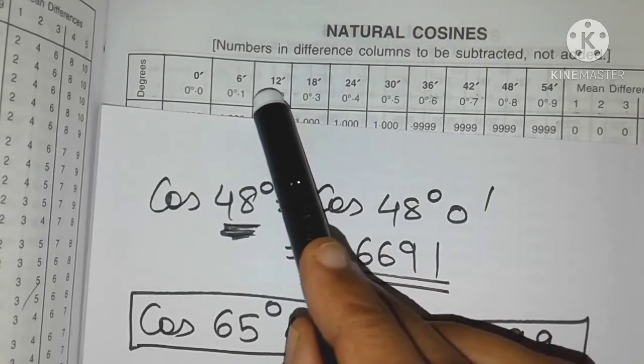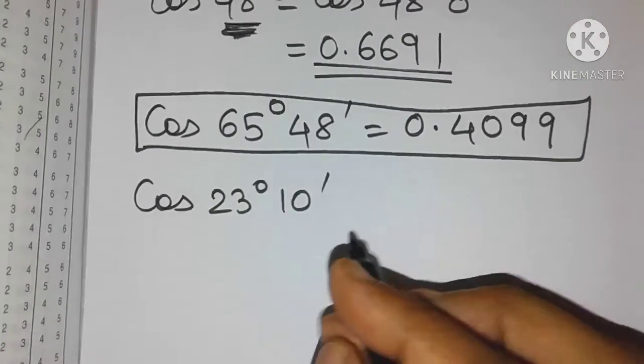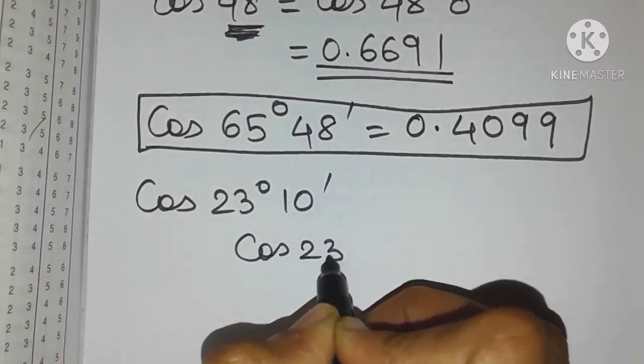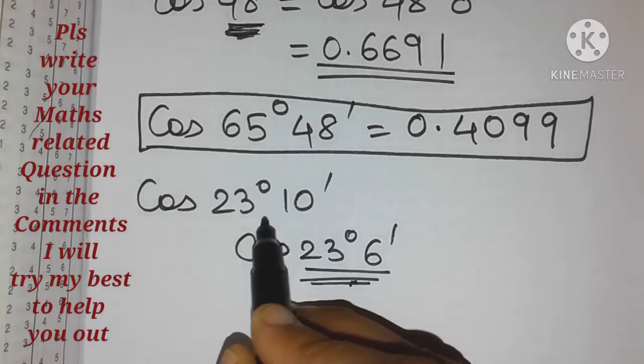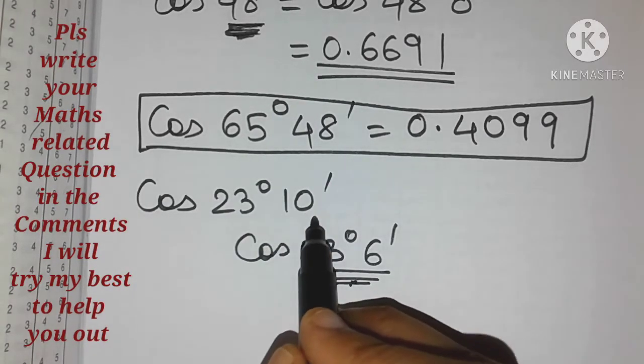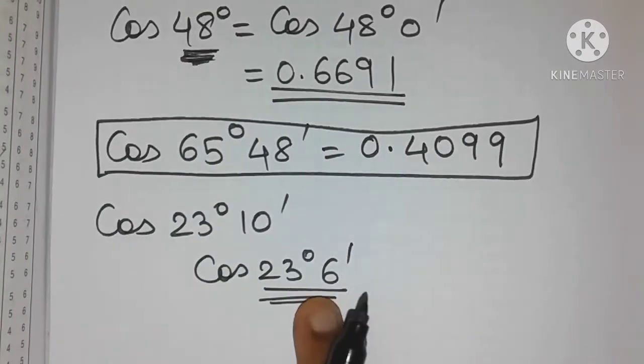So which number is lesser than 10 friends? 6 or 12? Definitely 6. So what we do is we find out cos of 23 degrees 6 minutes. So what is this angle? It is the angle which is closest to 23 degrees 10 minutes and is also lesser than that. So let's first find out this cos.